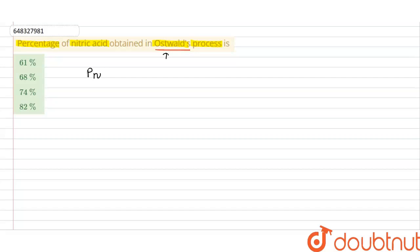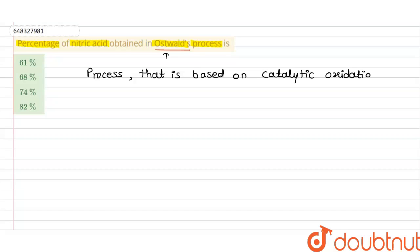Basically, what is the Ostwald process? It is a process that is based upon the catalytic oxidation — specifically, the catalytic oxidation of ammonia (NH3) by atmospheric oxygen.